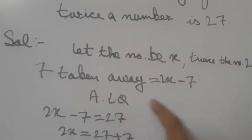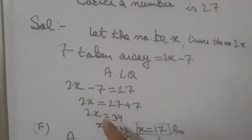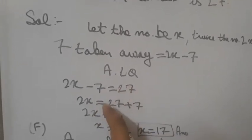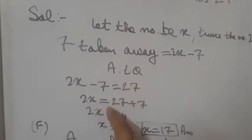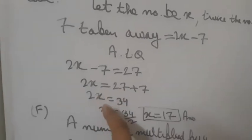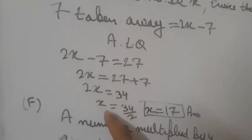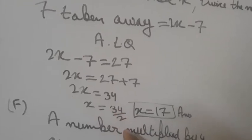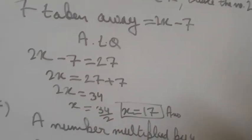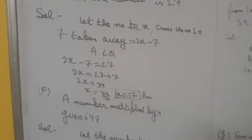According to the question, 2x minus 7 = 27. So 2x = 27 + 7 = 34. Dividing both sides by 2, x = 17. That is the answer, children.